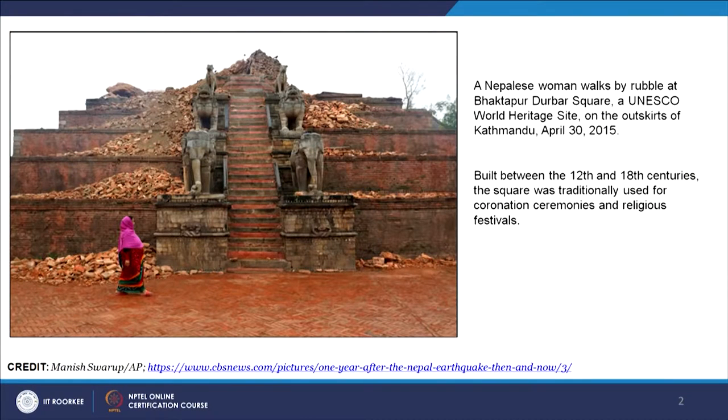Whenever a disaster happens, we encounter a huge loss — not only to the lives of people, but also to their properties, civic buildings, religious buildings, and the cultural heritage of communities. In this photograph you are seeing the Derbagh Square in Nepal, from the recent Nepal earthquake, and many historic buildings listed under UNESCO heritage have been demolished.